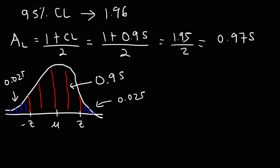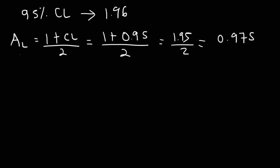So if you don't want to draw a picture, you can simply use this formula to calculate that area. It's a quick and simple way to calculate the area under the curve to the left, and then you can use that to get the z-score instead of having to draw a picture each time and determine the area that way.